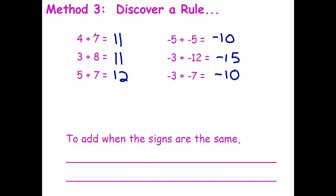If I add two positive numbers, what I'm really doing is just adding the numbers, and there's the answer. If I add two negative numbers, I just add the two numbers — I think of that as three plus twelve is fifteen — and I keep the negative sign. So the way that I write this: to add when the signs are the same, just add the numbers.